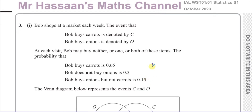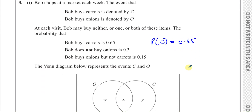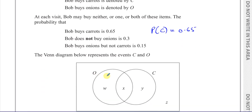So we can put some notation to this. The probability of C is 0.65. So we have a Venn diagram, and that means this circle should show 0.65 in total. We can say from this that X plus Y equals 0.65 from the information we see here.